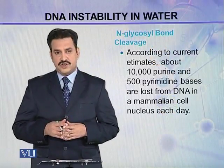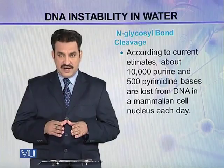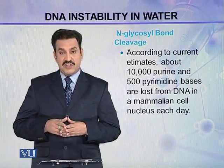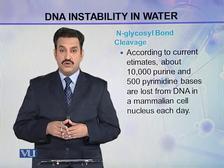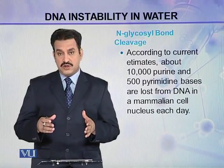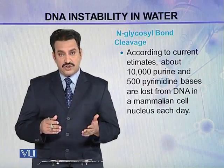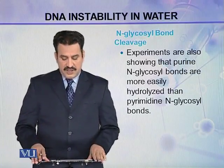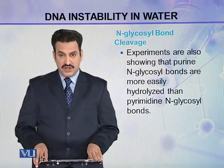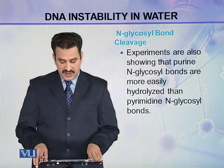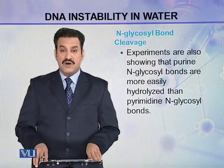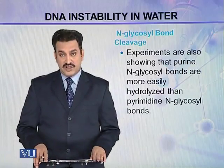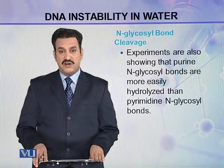According to current estimates, about 10,000 purine and about 500 pyrimidine bases are lost from DNA in a mammalian cell nucleus each day. This is a significant loss. Purine glycosyl bonds are more easily hydrolyzed compared to pyrimidine glycosyl bonds, which explains why approximately 10,000 purines but only 500 pyrimidines are damaged.